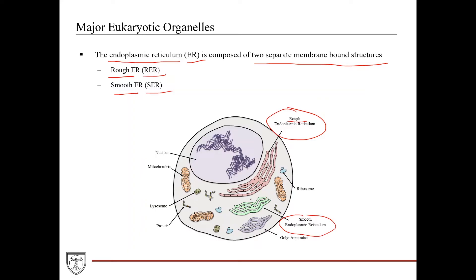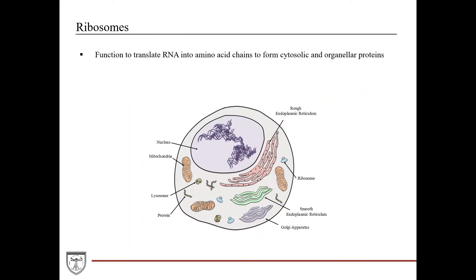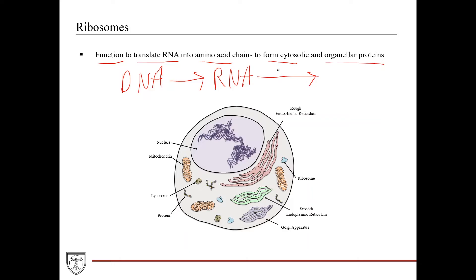Smooth ER has different functions and visually it doesn't have these ribosomes, so it looks much more smooth on electron microscopy. Ribosomes function to translate RNA into amino acid chains that form both cytosolic and organelle proteins. Remembering the central dogma of biology: DNA is transcribed into RNA, and then RNA is translated into polypeptides, and then polypeptides form proteins. This translation step is carried out by the ribosome.